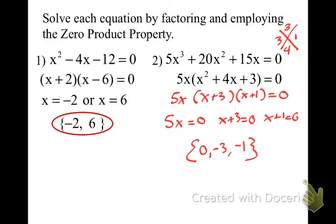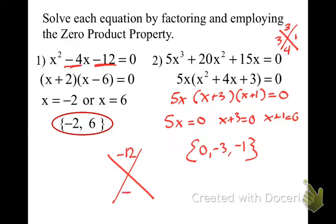Cheyenne asks how we get 2 and negative 6 on the first problem. Using x-marks-the-spot, we ask what multiplies to negative 12 and adds to negative 4 — that's negative 6 times positive 2. So we put negative 6 here and positive 2 here. The square root of x squared is x and x, and then to solve that gives negative 2 and 6 — the opposites of what's in the factors.